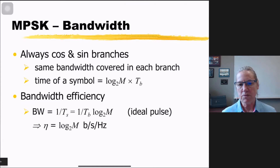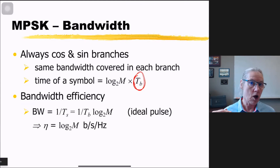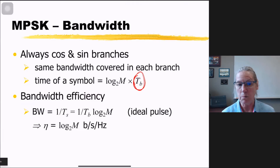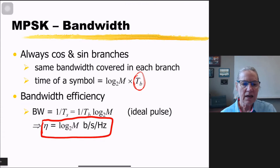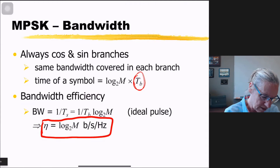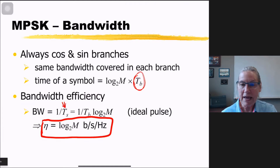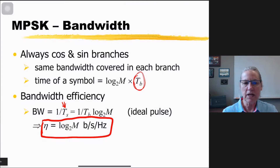If we fix the bit rate so the time of a bit is fixed, then the time of a symbol gets longer and longer as we add more constellation points. A longer symbol time means a smaller occupied bandwidth. So with MPSK the spectral efficiency is log₂(M) bits per second per hertz, because the bandwidth always equals the symbol rate 1/Ts = 1/(T·log₂M), giving log₂(M) bits per second per hertz.